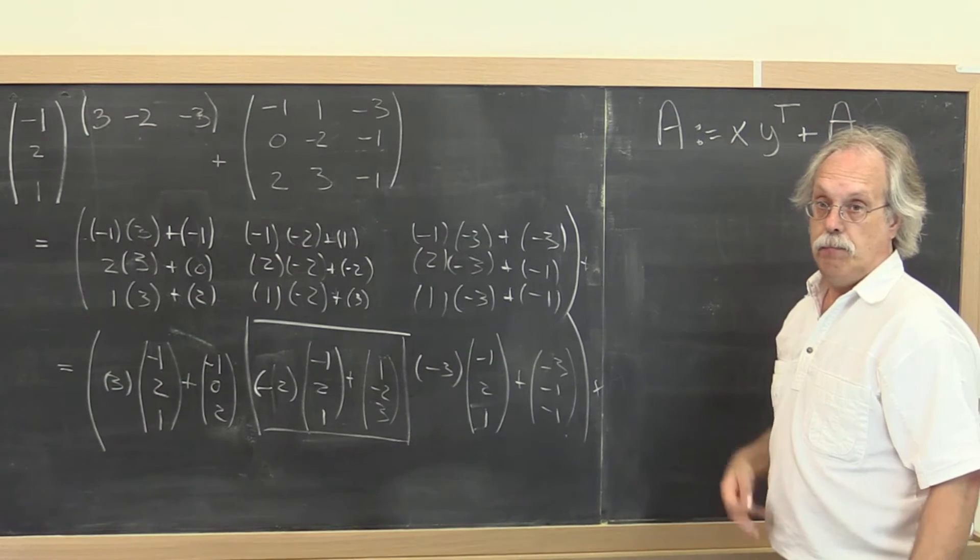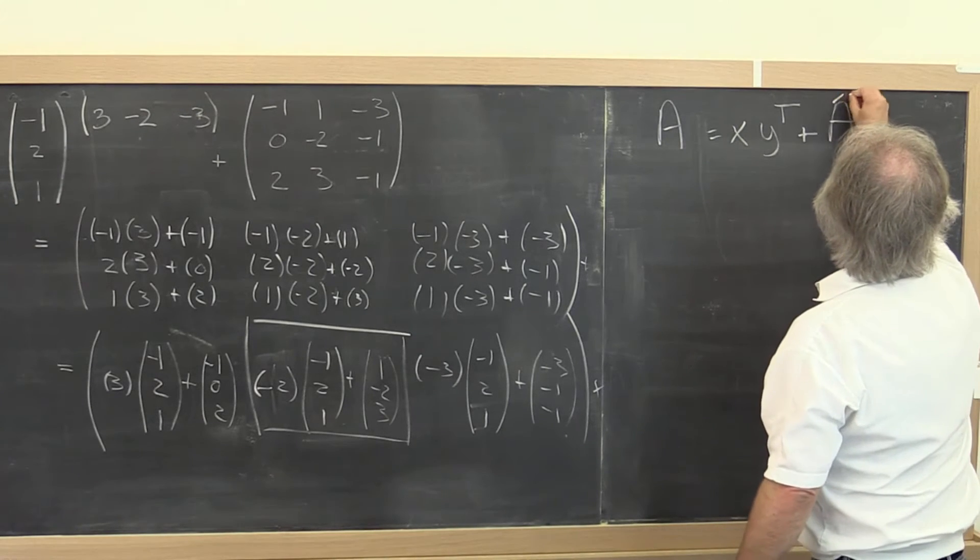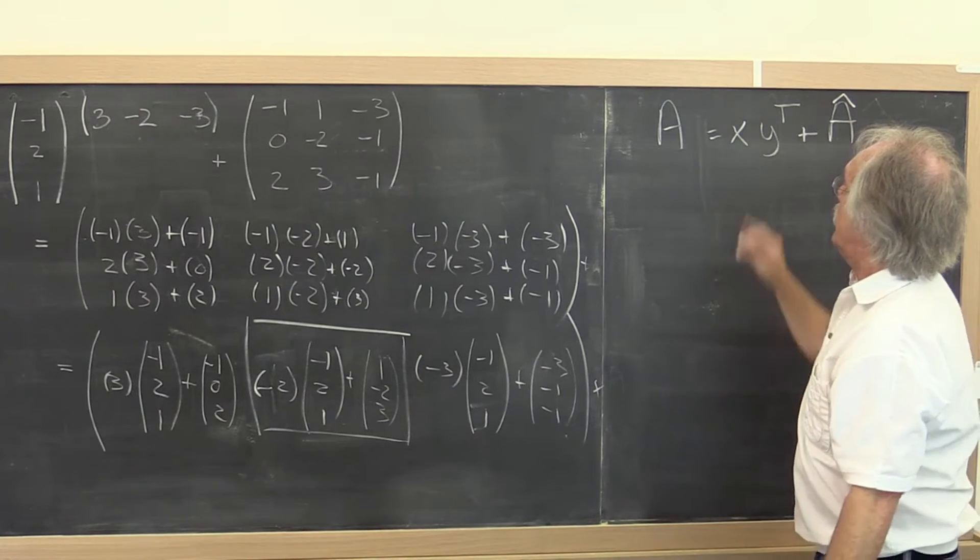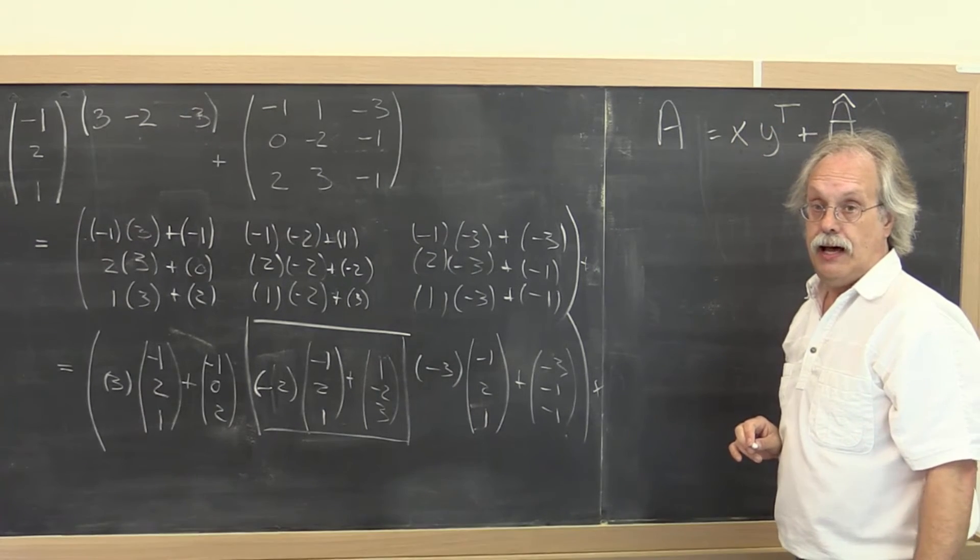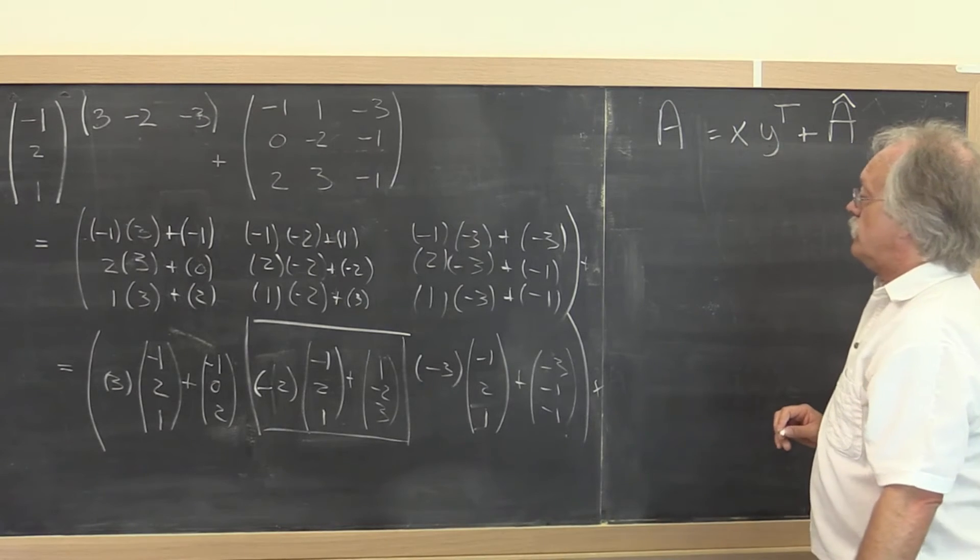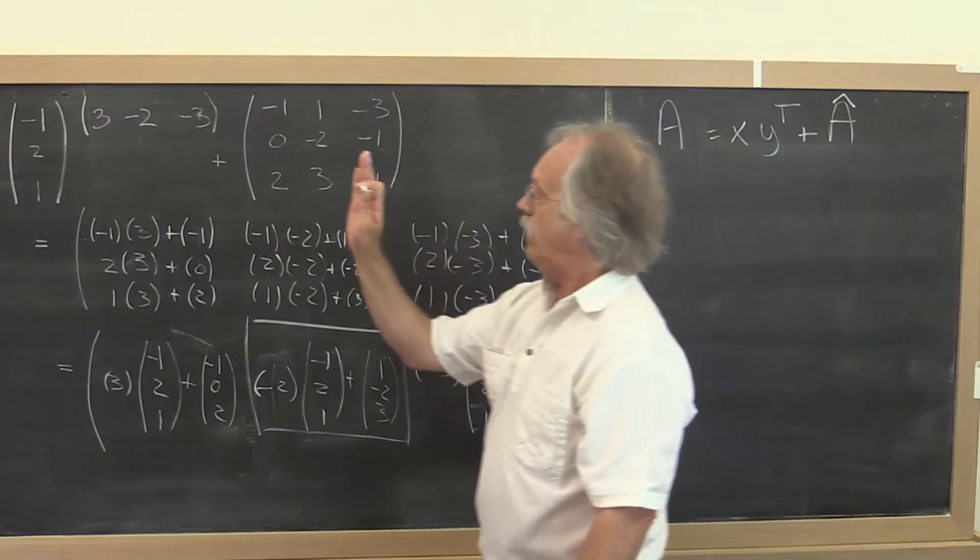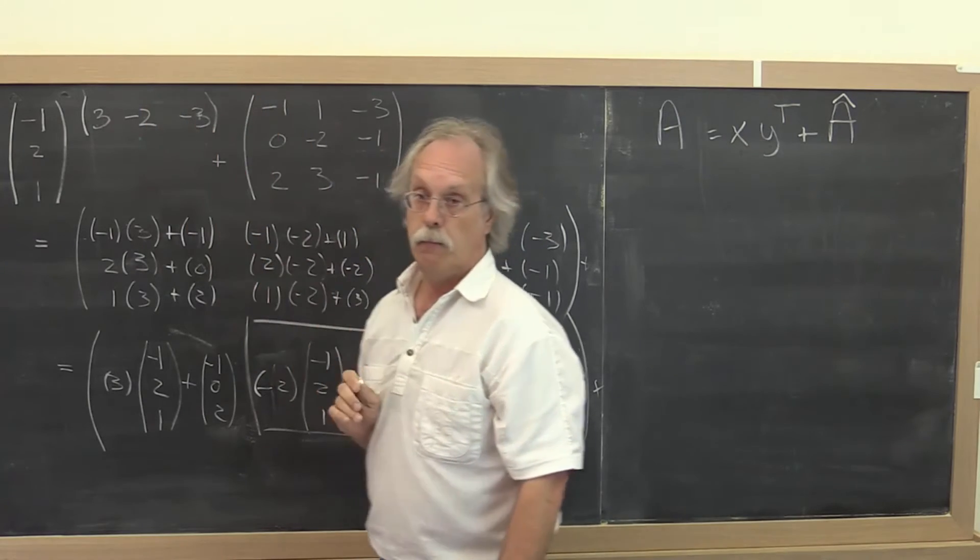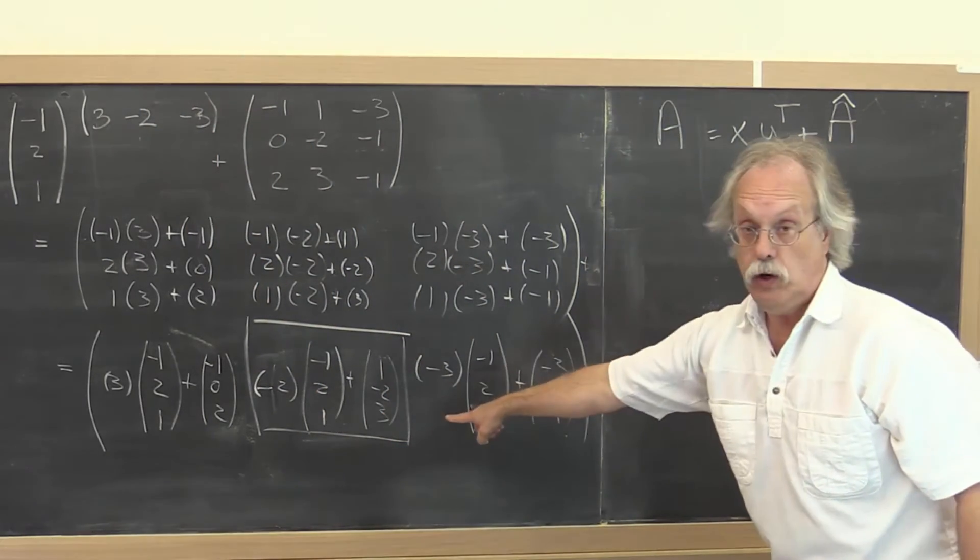As a post condition, we write that as A is equal to x times y transpose plus A hat. So that's the post condition. Seems to me here that we were thinking in terms of partitioning by columns. So, certainly when we look at it that way.